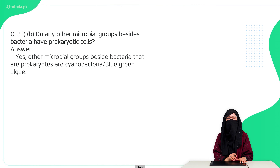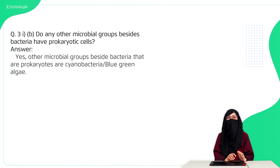The second question is: do any microbial groups besides bacteria have prokaryotic cells? Yes — cyanobacteria, which we call blue-green algae, also have prokaryotic cells.